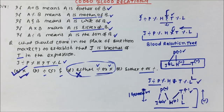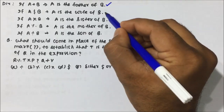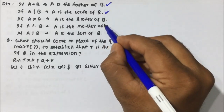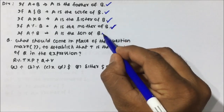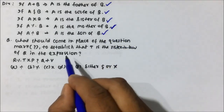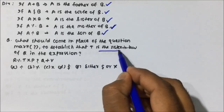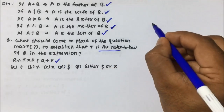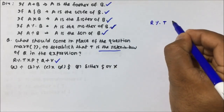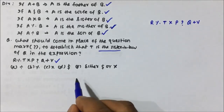Let's move to question two, a similar kind of question. A plus B means A is father of B; A dollar B means A is wife of B; A cross B means A is sister of B; A percentage B means A is mother of B; A division B means A is son of B. What should come in the place of the question mark to establish that T is sister-in-law of Q in the expression: R percentage T cross P question mark Q plus V?